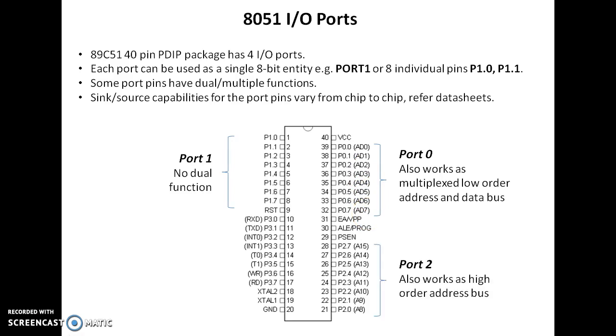Port 2 serves as a high-order address bus. So port 0 and port 2 combinedly serve as an address bus A0 to A15. And port 0 also provides bidirectional data bus which is multiplexed with the low-order address bus.